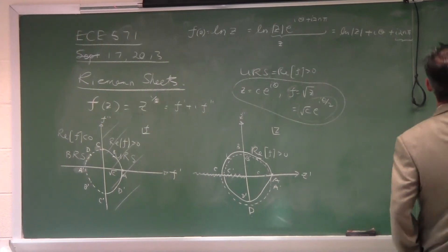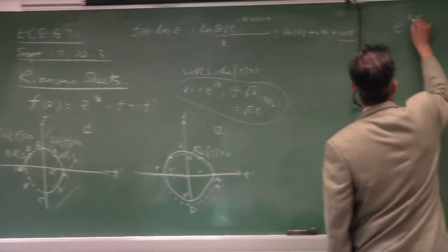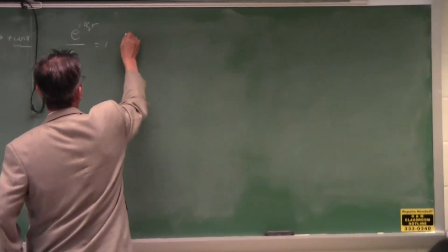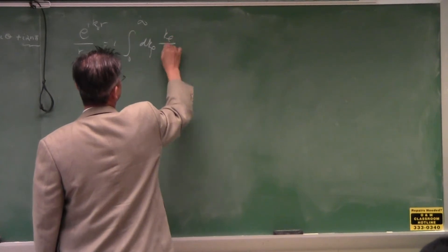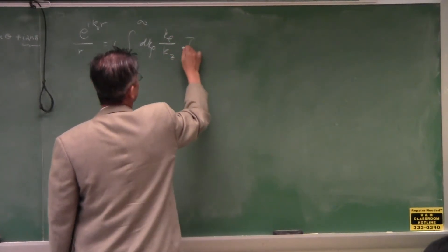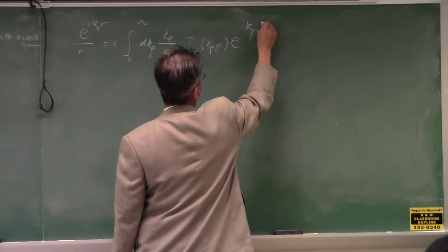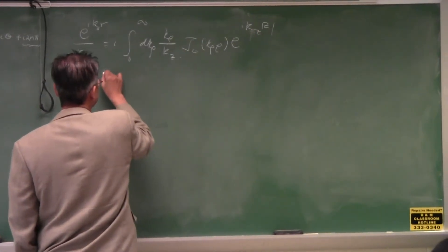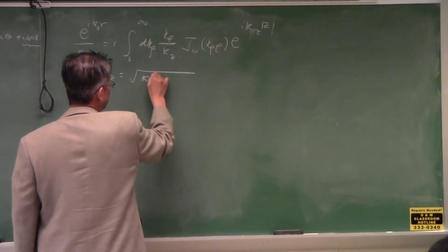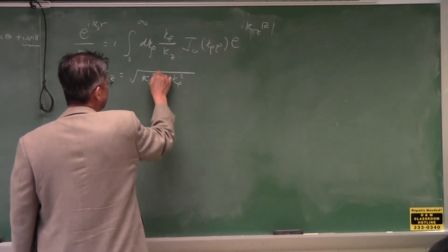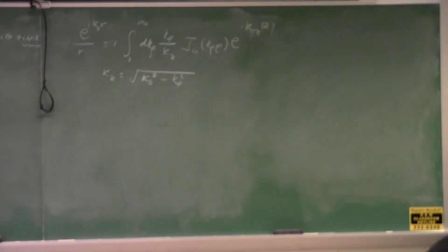So we go back to the Sommerfeld identity and the Sommerfeld branch cut. We have this identity that equals the Z function, which we derive to convince you that it's correct, and you have homework to play around with it. However, Kz = √(K₀² − Kρ²) is a multi-value function that is not precisely defined unless you define the double-value function contained within it.